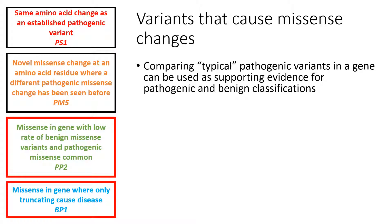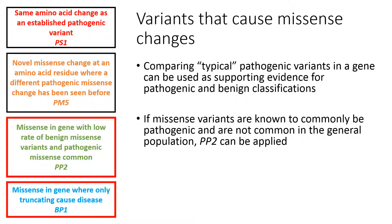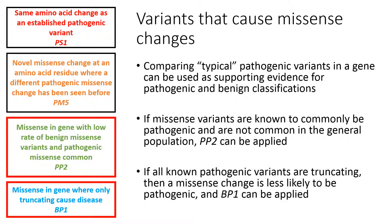There are two criteria which consider the types of variants which typically are pathogenic within a given gene and can be applied to novel missense variants as supporting evidence toward either pathogenic or benign classification. These are PP2 and BP1. If missense variants are known to commonly be pathogenic, and if we do not commonly see missense variants at a significant allele frequency in the general population, then PP2 can be applied. If all known pathogenic variants are truncating, then a missense change is less likely to be pathogenic, and BP1 can be applied.